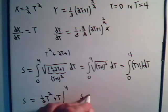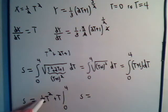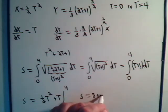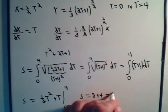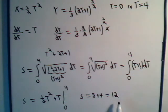So S will equal, put 4 in: 4 squared is 16 divided by 2 is 8 plus 4, and we're subtracting 0 here, so the particle travels 12 units.